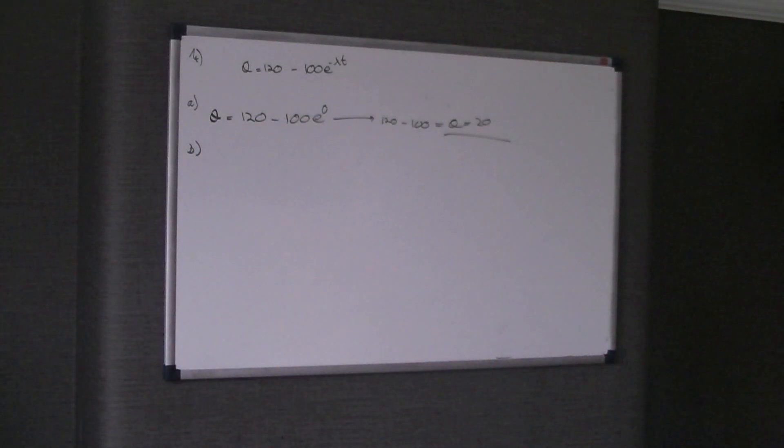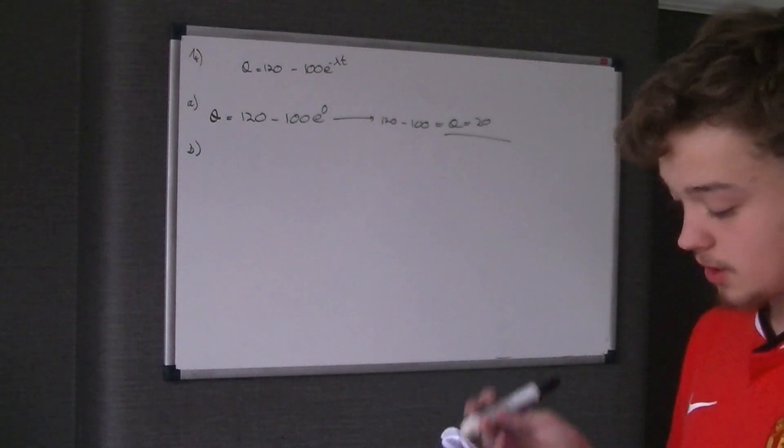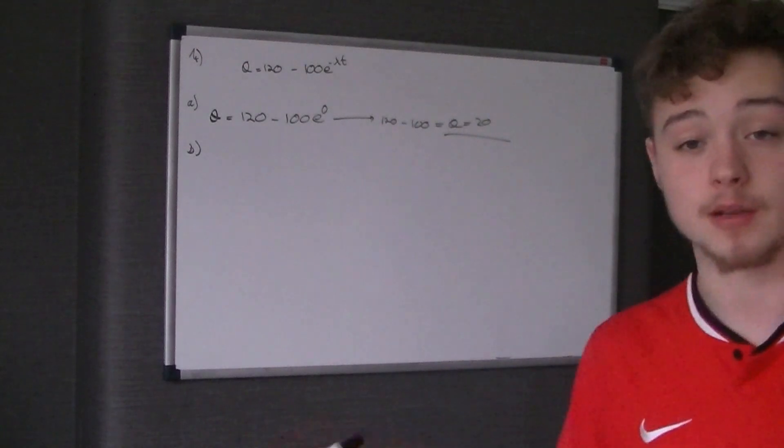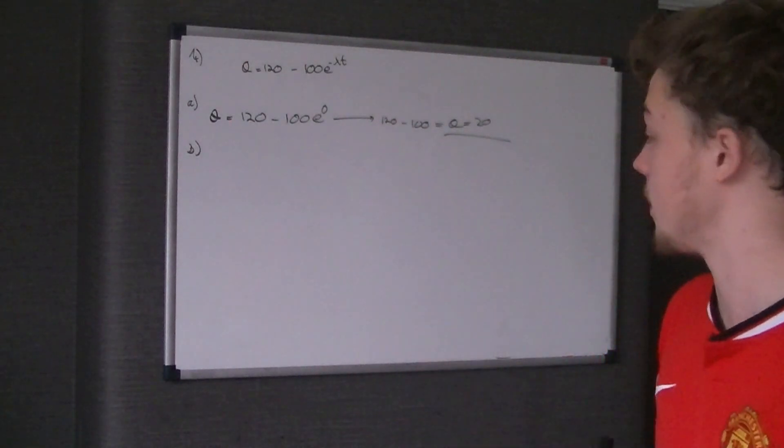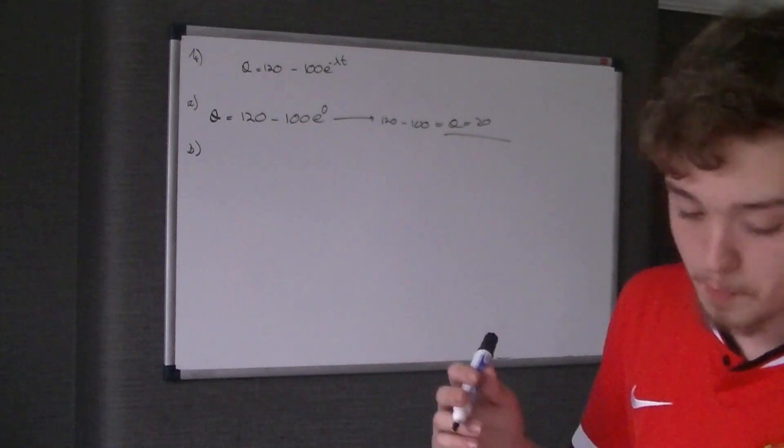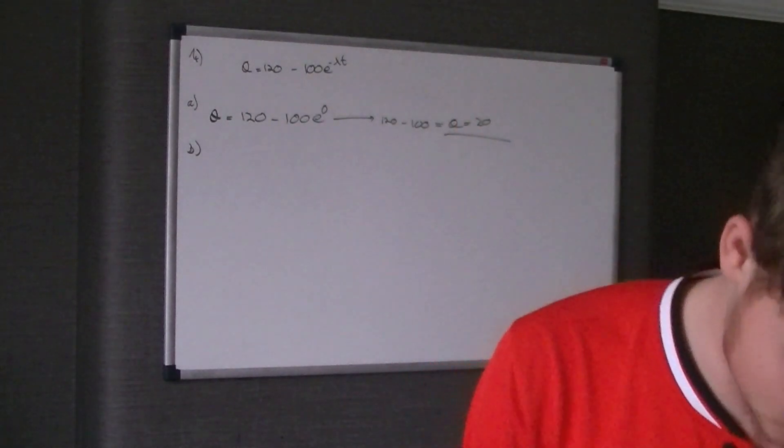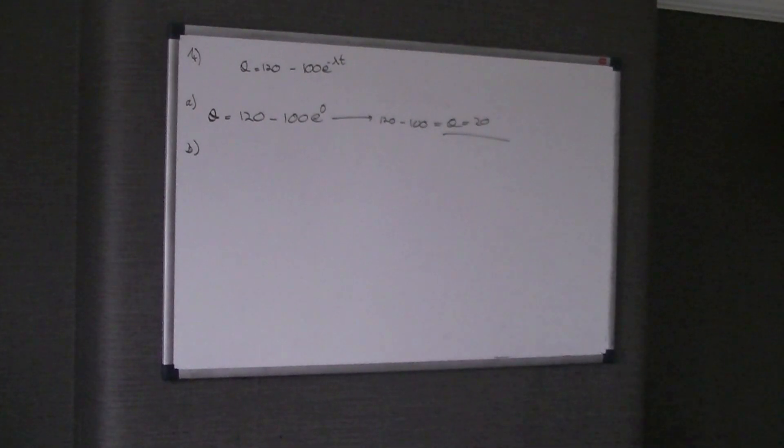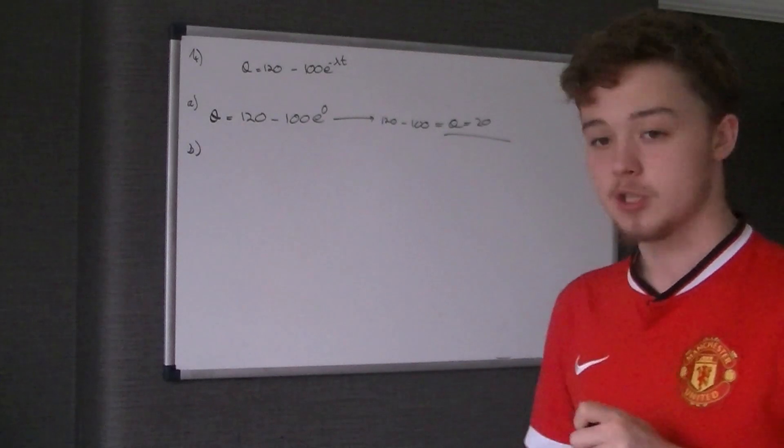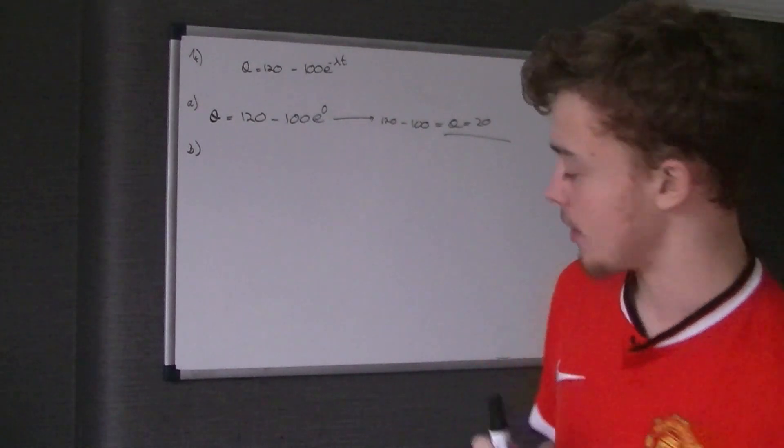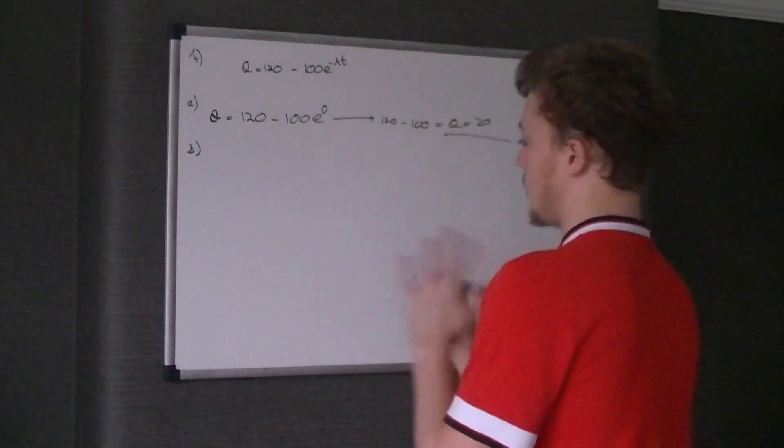Next question, part B. Part B says, given that the temperature of the water is 70 degrees when t equals 40, so it's giving me a bit of background. Find out what lambda is in terms of ln A over B. Now, I'll explain why I hate this part of the question. Not because the maths is particularly tricky, but it's more to do with the fact of how cynical they are about your answer.